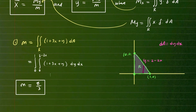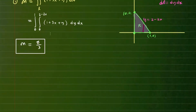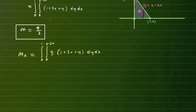Now let's set up the integral for center of mass by finding the moments about x and y. The moment about the x-axis uses the same double integral setup: from 0 to 1 in x, and from 0 to 2 − 2x in y. For the moment about the x-axis, we multiply by y times the density, giving y(1 + 3x + y) dy dx. Everything is identical to the mass setup except for the extra factor of y.